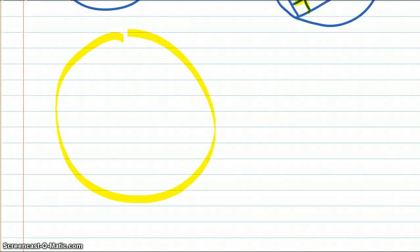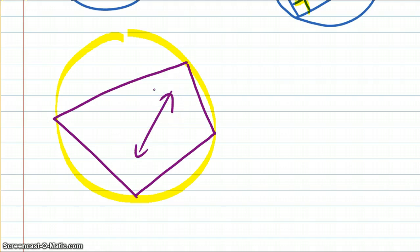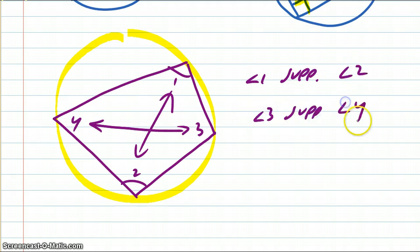Then we inscribed just a random quadrilateral, and we learned that these opposite angles, so like angle 1 and angle 2, angle 3 and angle 4. So 1 and 2 are supplementary, and 3 and 4 are supplementary. Angle 1 is supplementary to angle 2, and angle 3 is supplementary to angle 4, which means they add up to be 180 degrees. So if I give you one, you can find the other one. For example, if this was 80, this would have to be 100. And if this was 120, then this would have to be 60 degrees because they have to add up to be 180 degrees.